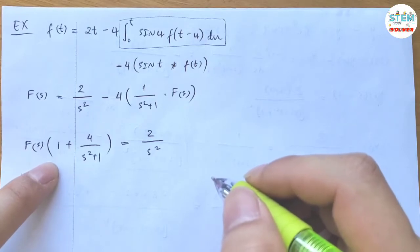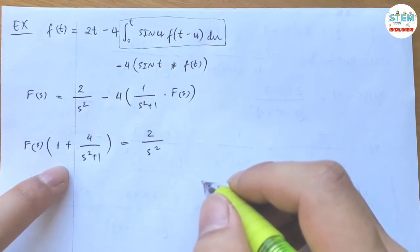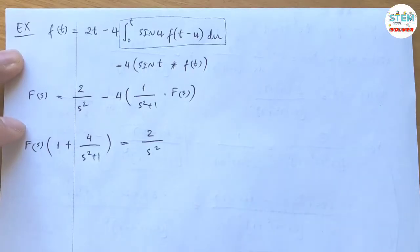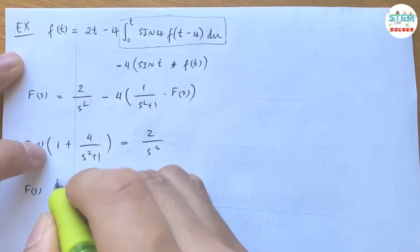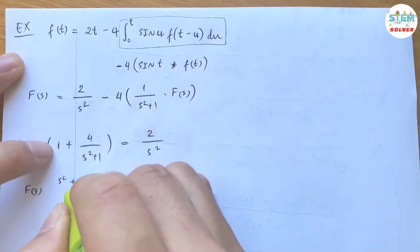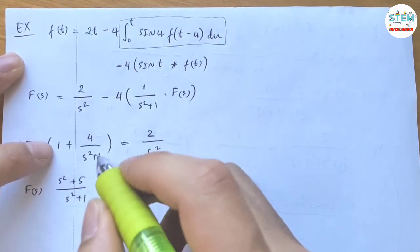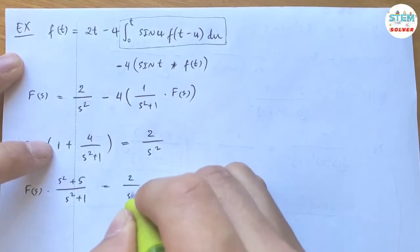And now for this one, I'm going to combine this together to make it become one fraction. So multiply this by s² + 1. So I have s² + 5 over s² + 1 equals 2 over s².